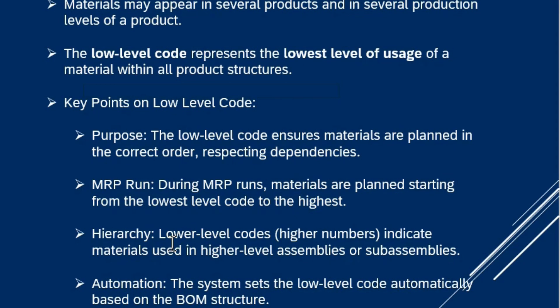The low level code indicates materials used in higher-level assemblies or sub-assemblies, helping define the hierarchical structure. Importantly, the low level code cannot be maintained manually — it is set automatically by the system based on the bill of material structure. When you create a BOM, the low level code is automatically fixed in the material master.